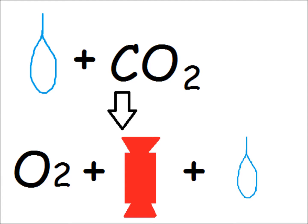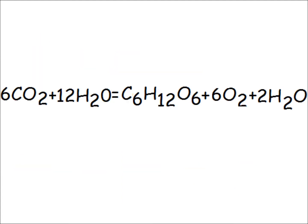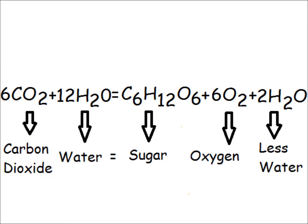This process can be summarised by this equation. This may seem complicated, but if you look closely, you can see it's just water and carbon dioxide being converted into oxygen, sugar and water. This water is used by plants, as are the sugars, and the oxygen is released.